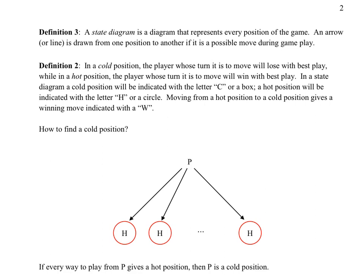The main tool we're going to discuss in this video is a state diagram. A state diagram represents every position of the game in some clever way of writing out a diagram. If we draw an arrow or possibly a line from one position to another, it represents a possible move during gameplay.